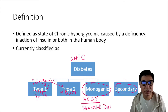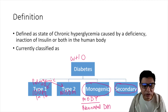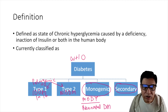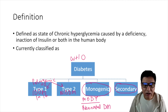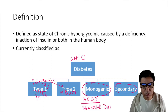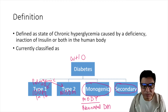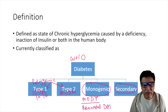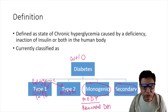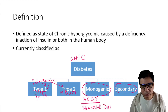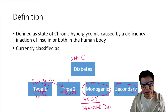Secondary diabetes is caused by different secondary issues. The problem is not basically in insulin quantity or quality; rather the counter-regulatory hormones which act against insulin are increased. Conditions such as glucagonoma, Cushing's syndrome, cystic fibrosis, or hemochromatosis can cause secondary diabetes. Certain drugs used long-term can also cause diabetes as a side effect.